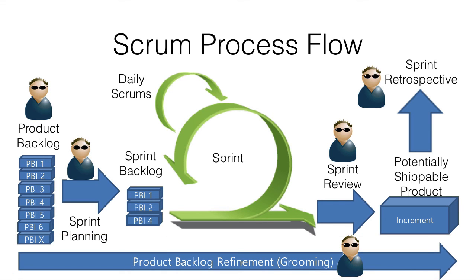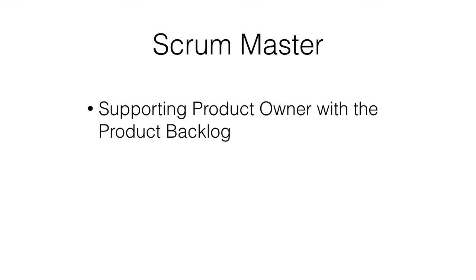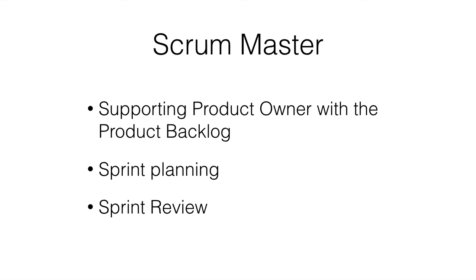So there you have it — a typical Scrum process. It looks like the Scrum master needs to keep his finger on the pulse the whole time, keeping busy supporting the product owner with the product backlog, sprint planning, and developing the sprint backlog, the sprint review, and the sprint retrospective. We'll see how he manages all that in the upcoming videos.